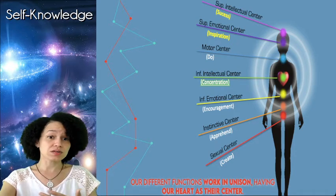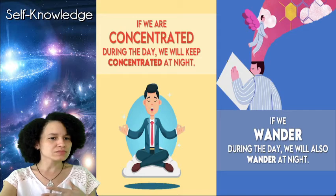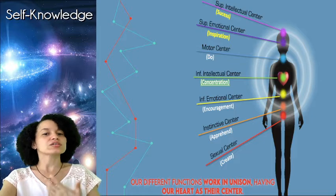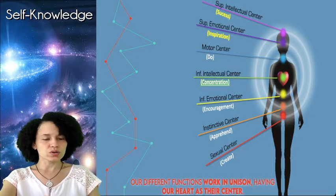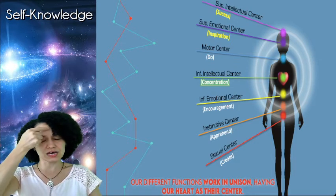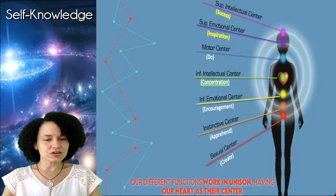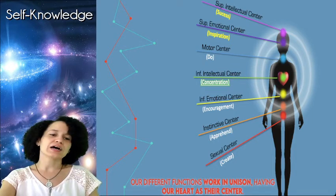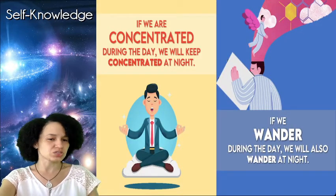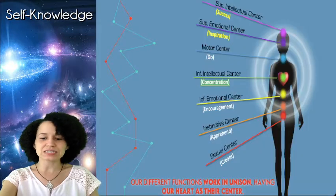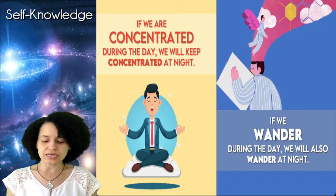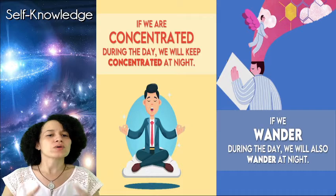We are concentrated when only one thought is sustained, when we sustain full attention on what we are doing. We can achieve inspiration that we receive from this center, and an instant later we will achieve success. The key to success in any practice is concentration. That is why we must practice until we achieve concentration.